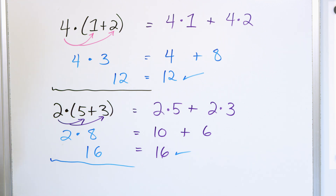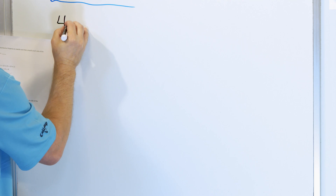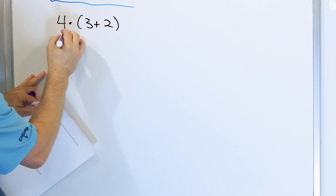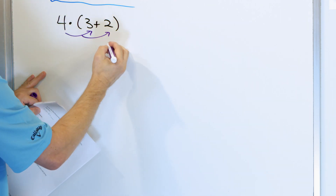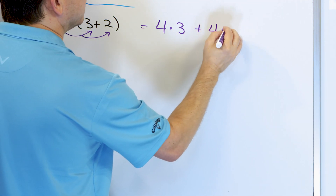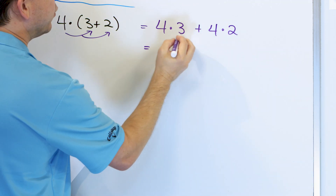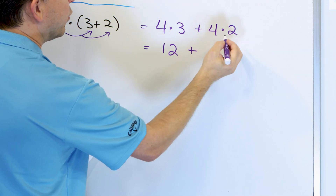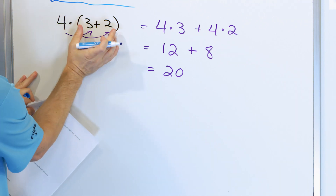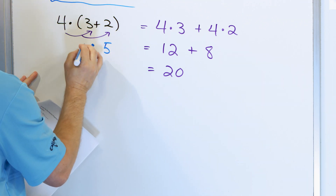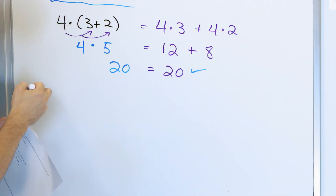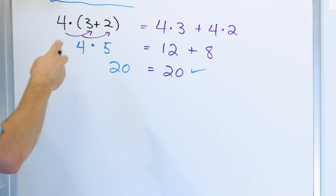Let's move along and crank through these. Let's say we have 4 times (3 plus 2). Using the distributive property, I distribute times the 3 and times the 2, so I get 4 times 3, plus 4 times 2. On the right-hand side, 4 times 3 is 12, and 4 times 2 is 8, giving us 20. Checking the left: 3 plus 2 is 5, and 4 times 5 is 20. So this is correct — distributing gives the exact same answer as order of operations.